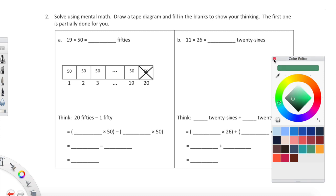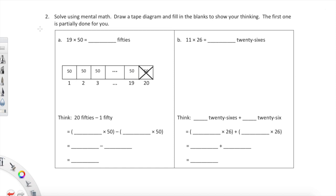Here's where things get pretty cool. I really love this strategy. We're told to solve using mental math, draw a tape diagram, and fill in the blanks to show your thinking. The first one is partially done for you. We have 19 times 50 equals 19 fifties, or 19 copies of 50. This tape diagram has already been provided. We have the first copy of 50, second, third, dot dot dot, all the way through the 19th copy of 50, and then the 20th copy is drawn and X'd out.